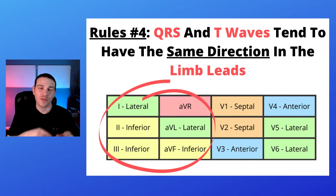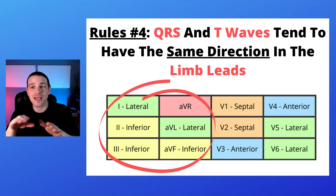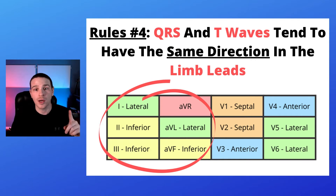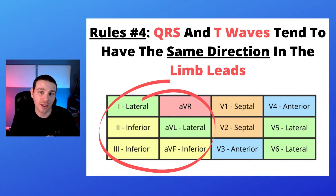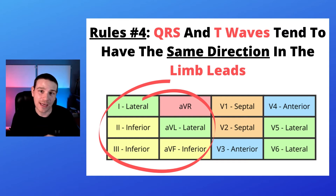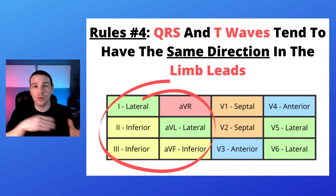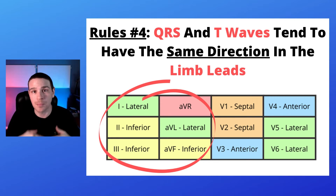Rule number four: the QRS and the T waves tend to have the same direction in all of the limb leads. The limb leads are lead one, lead two, lead three, lead AVR, lead AVL, and lead AVF. So the QRS and the T wave should all either be upright or all either deflect below the isoelectric line.